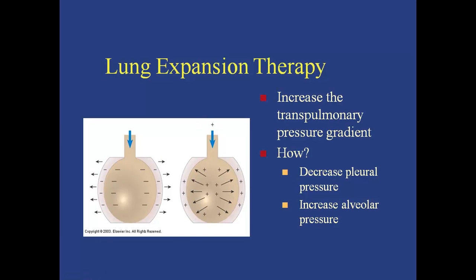Let's talk about lung expansion therapy — how we increase the volume going to the lungs. In order to increase volume, we need to increase the transpulmonary pressure gradient. The first way is to decrease pleural pressure, as shown in the first drawing of the alveolus. We decrease pleural pressure when we take a deep breath: we drop our diaphragm by pushing our belly out, creating a more negative pressure in the pleural space.